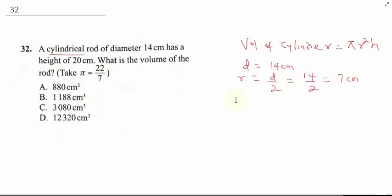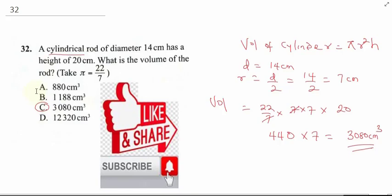Having gotten our radius, we can now plug in our formula. Volume will be 22/7 times 7 times 7, that's 7 squared, times the height, which is 20 cm. So 7 cancels to 7, so we have 22 times 20 times 7, which gives us 440 times 7. Multiplying 440 by 7 gives us 3,080 cm cubed. The correct answer is C.